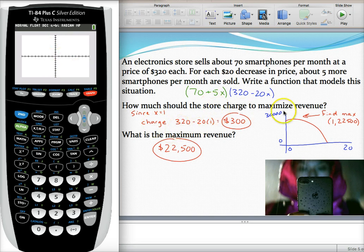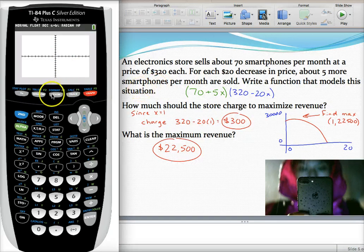So we need to adjust our window to something that's going to be a little more reasonable and show us what we want to see. So let's press window.